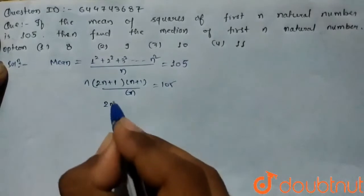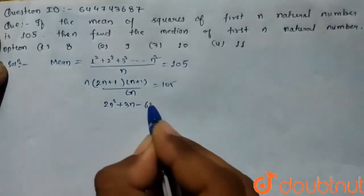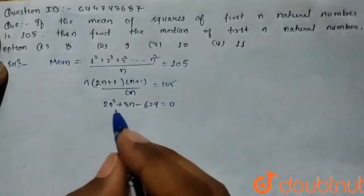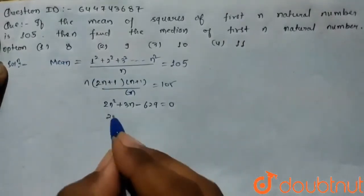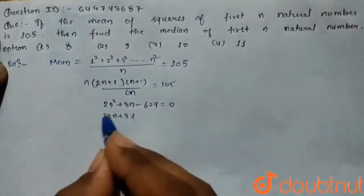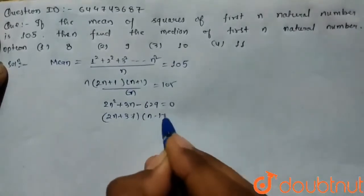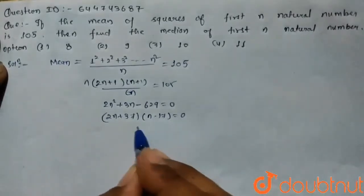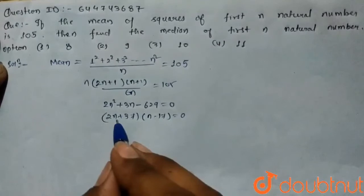2n² + 3n - 629 = 0. On solving, it breaks into two factors: (2n+37)(n-17) = 0. So n is never negative...